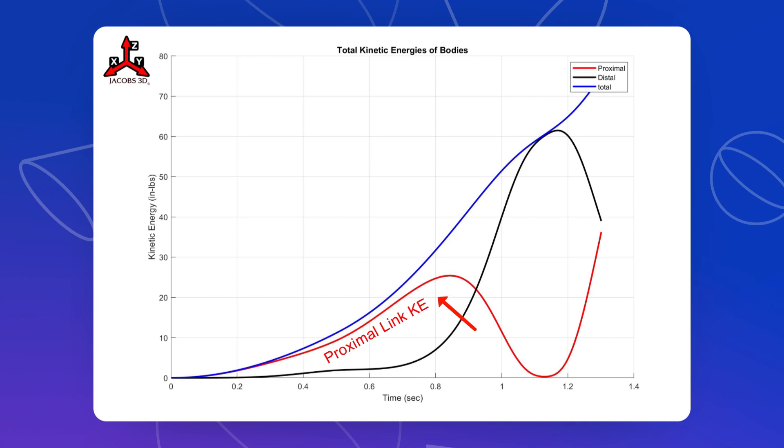Now, when you look at the proximal one, because we turned that proximal link on right away with torque, you can see that the total kinetic energy of the body and the kinetic energy of the proximal link are together. And then you can see here that the total kinetic energy goes above the proximal one as it starts to rise. So there's a separation here.